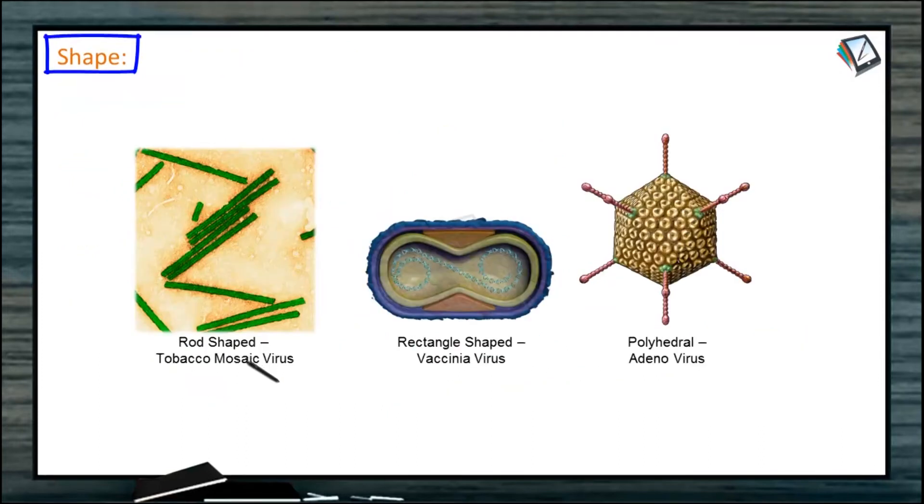Let us see the shapes of the viruses. See, these are rod-like. They are rod-shaped. Example: tobacco mosaic virus. Rectangle shape. Example: vaccinia virus.